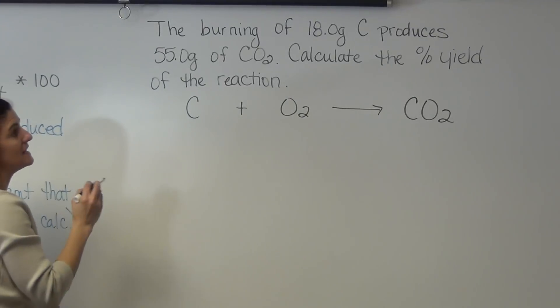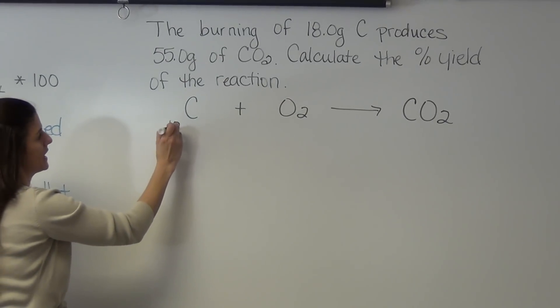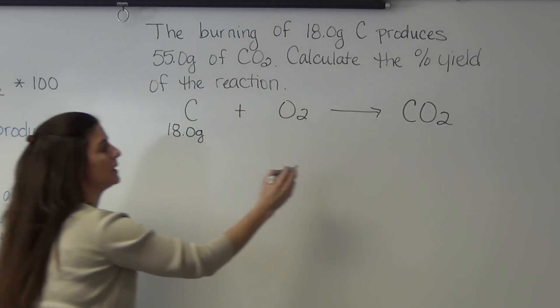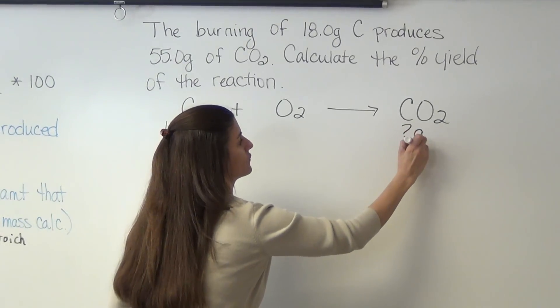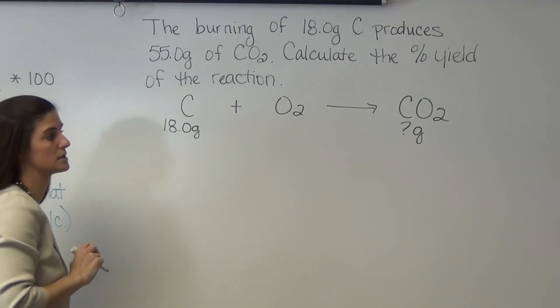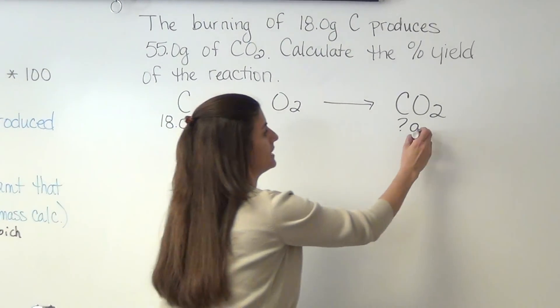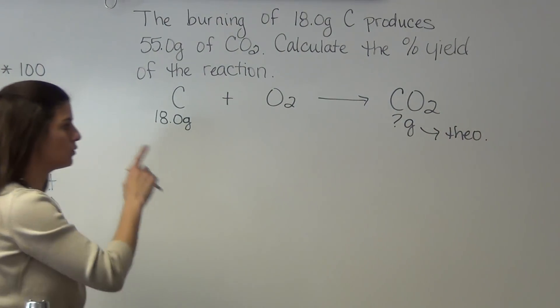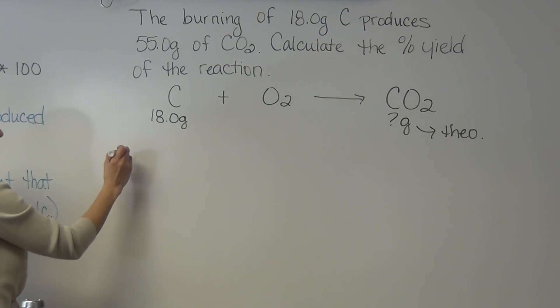Now, we're starting with 18 grams of carbon, so I'm just going to write 18 grams of carbon here. And we're trying to figure out how many grams of carbon dioxide we can produce. This is our theoretical mass once we find it. We're just going to abbreviate it. So we're going to do a mass-to-mass problem.